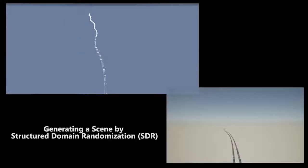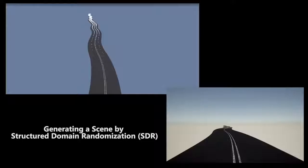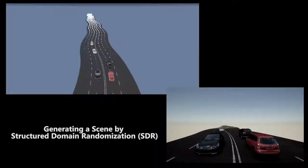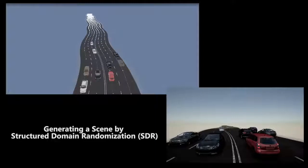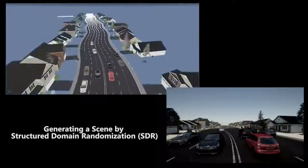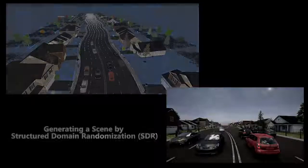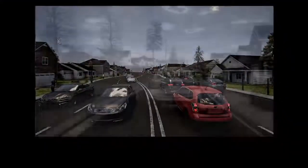Structured domain randomization is a generalized technique for procedurally generating synthetic random images that preserve the structure or context of the problem at hand. Images generated by SDR can be used to train a neural network for perception tasks such as object detection on real images.